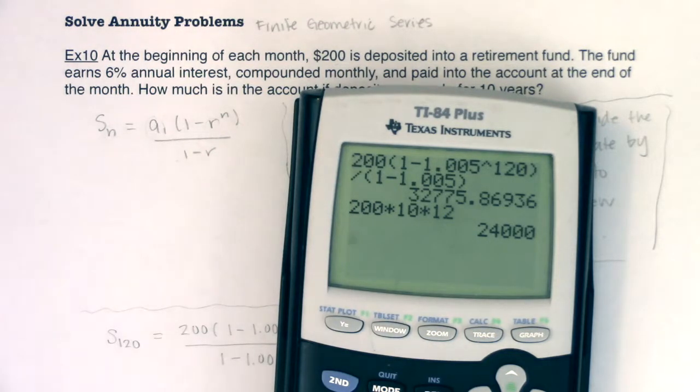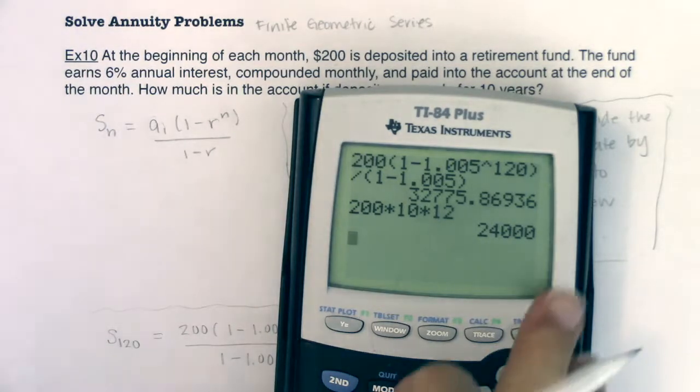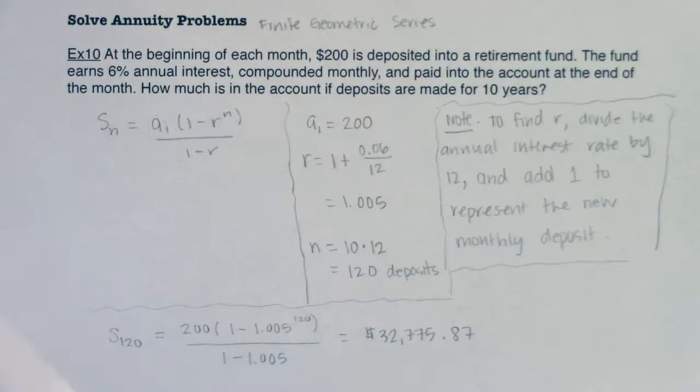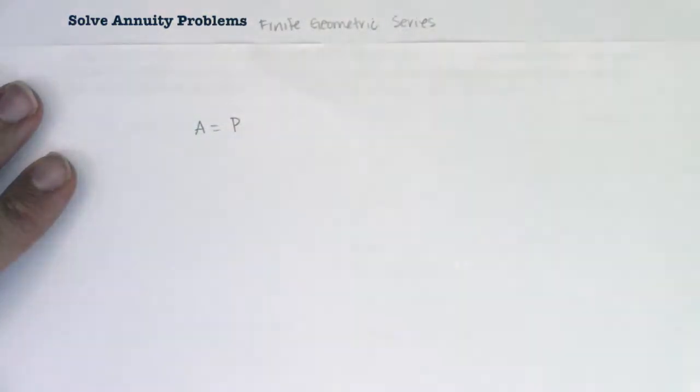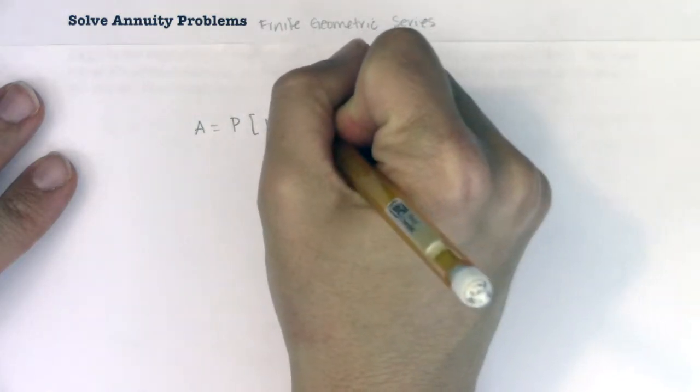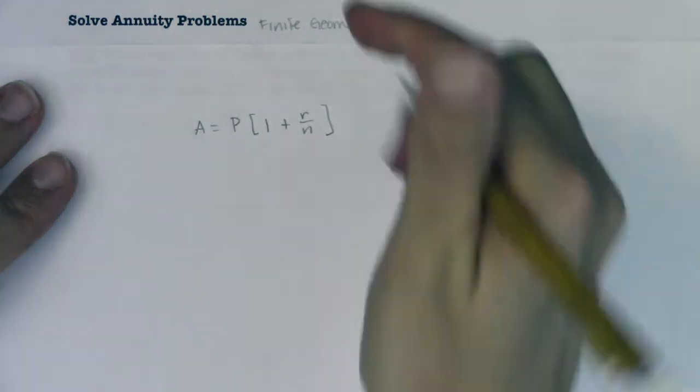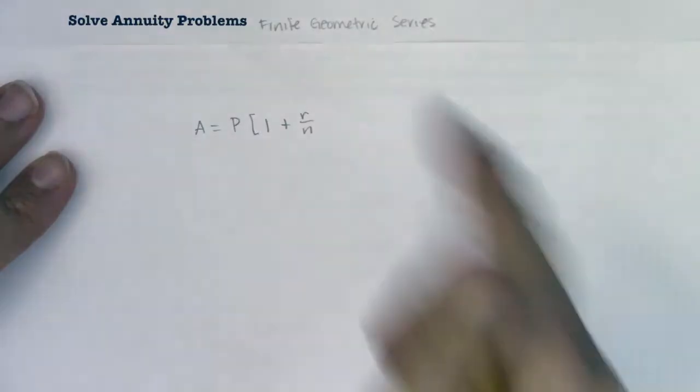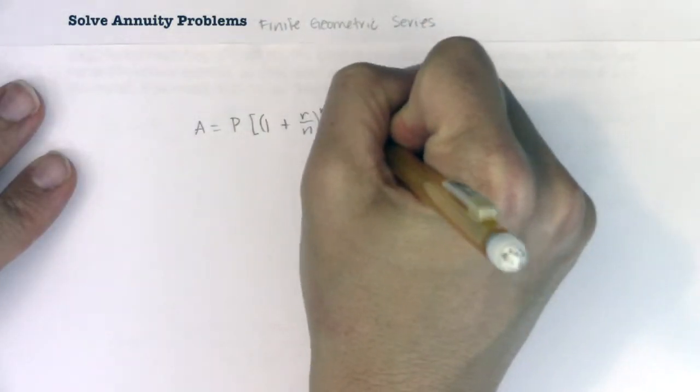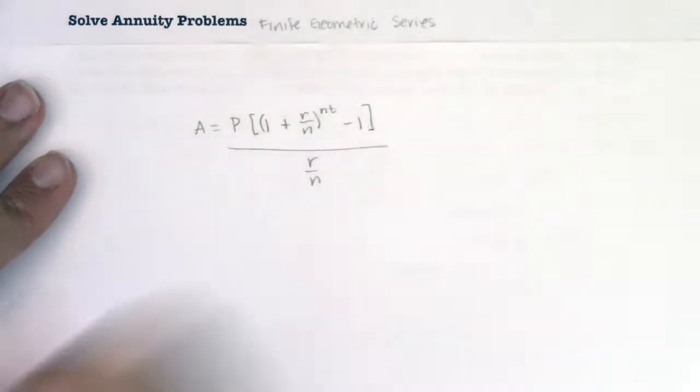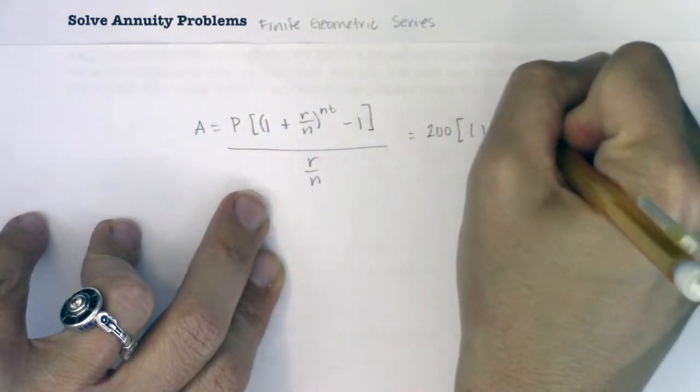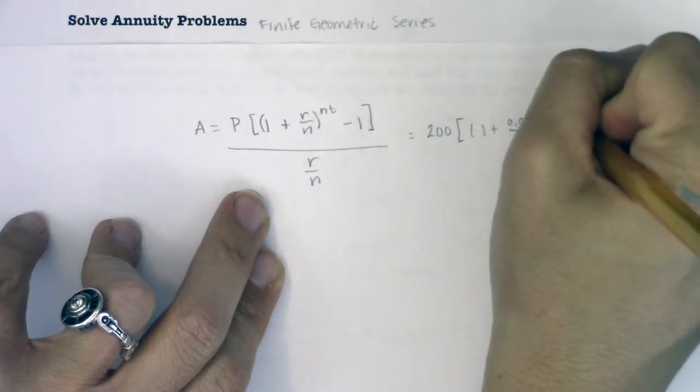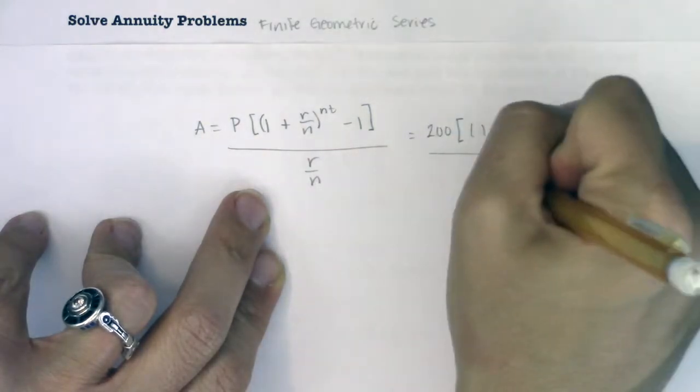If you want to know about the formula that would get you there directly, the annuity formula, and this is just doing it more of the exponential growth way, let me show you what that is. The annuity formula, if you want to ignore the series part, you can say that a equals your principal p times [(1 + r/n) to the nt minus 1] all over (r/n). Which looks like a lot, and it is. But in this case, that would mean I would go $200 times [(1 + 0.06/12) to the (10 times 12) minus 1] all over (0.06/12).